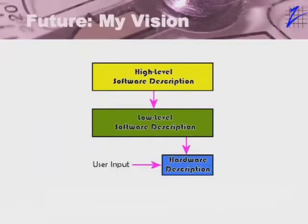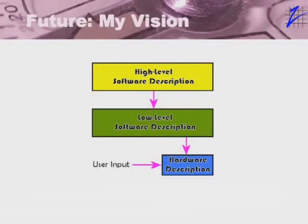Here's my vision of the future — somewhat different than what others see, and time will tell which vision is correct. My vision is that we start with a high-level software description. Software defines the operation of a system, so you can really define everything through software, perhaps not in today's language. The idea is to create higher-level statements that are part of the software, and then synthesize that down to a low-level description — for example, C code plus higher-level statements synthesized down to pure C code.